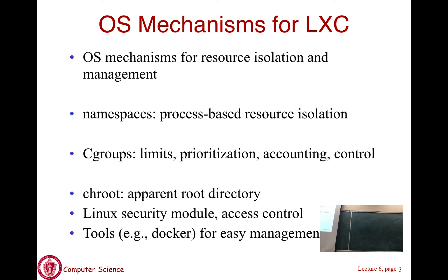How do you manage these containers? The OS provides mechanisms for resource isolation and management. There are two mechanisms: one is called namespaces and the other is called cgroups. Namespaces provide process-based resource isolation. Cgroups — called control groups in Linux — allow you to specify limits and priorities. You can say container one gets a limit of 30% of the CPU, 2 gigabytes of RAM, and can only see certain files. You can also specify priorities. Once you do this, a namespace gets created that says this is all that you see. Each namespace is essentially assigned to a container.